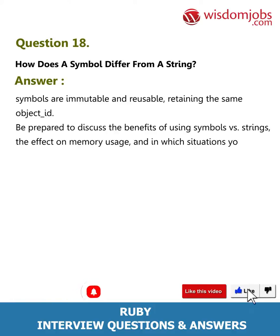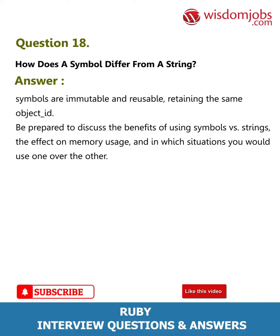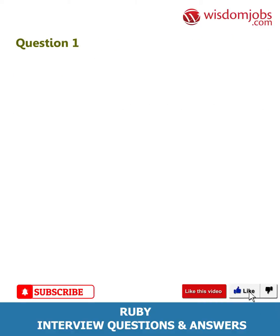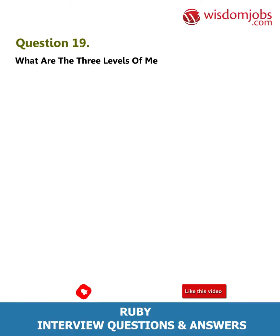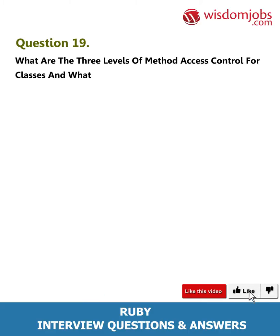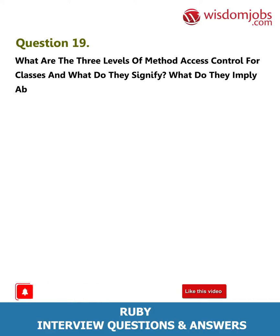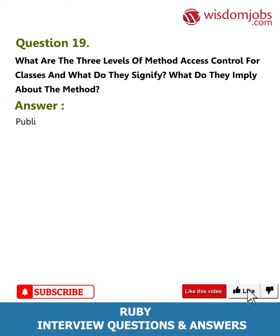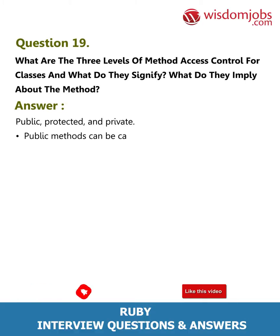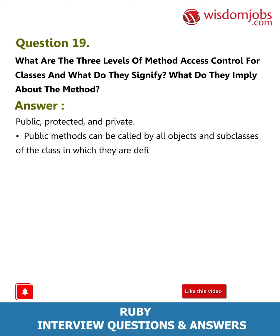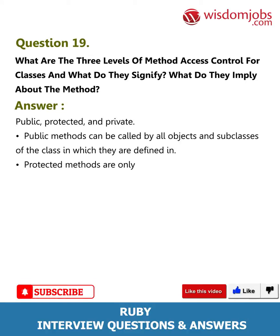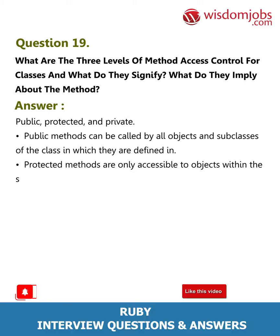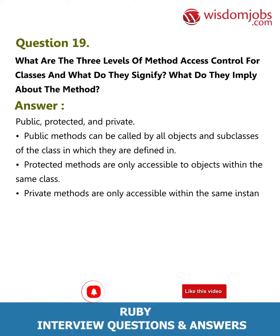Question 19: What are the three levels of method access control for classes and what do they signify? Answer: Public, protected, and private. Public methods can be called by all objects and subclasses of the class in which they are defined. Protected methods are only accessible to objects within the same class. Private methods are only accessible within the same instance.